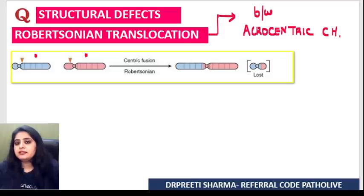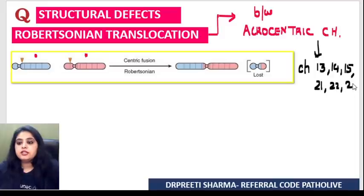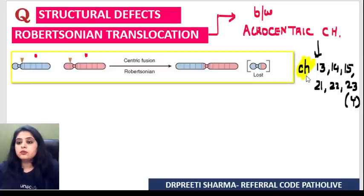Do you remember any chromosome numbers that are acrocentric? Chromosome 13, 14, 15 in order, and next 21, 22, and 23Y. So chromosomes 13, 14, 15, 21, 22, and 23Y are all acrocentric chromosomes.